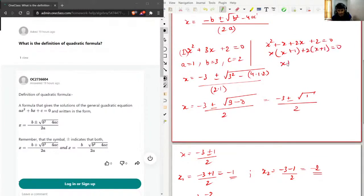This will be x plus 2 times x plus 1, and yeah, so this will be x minus 2 minus 1.